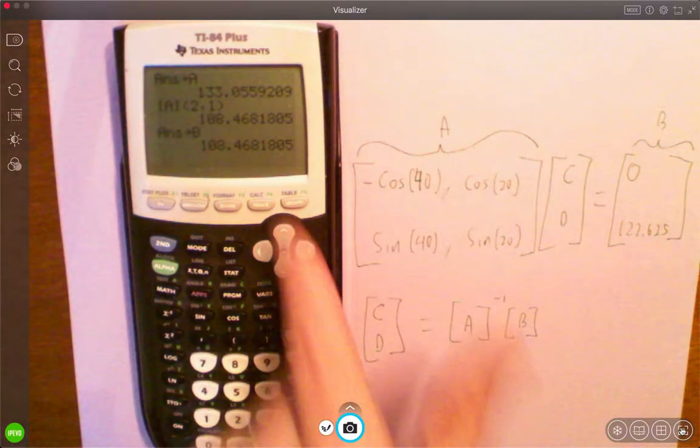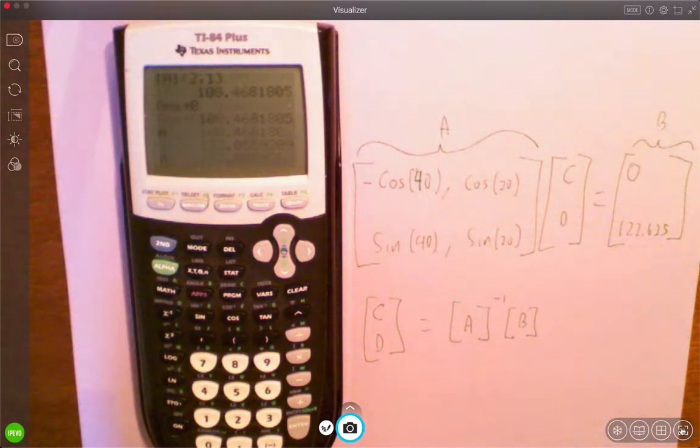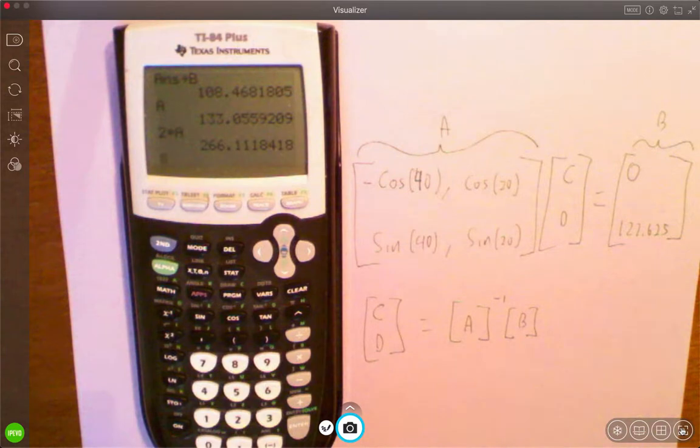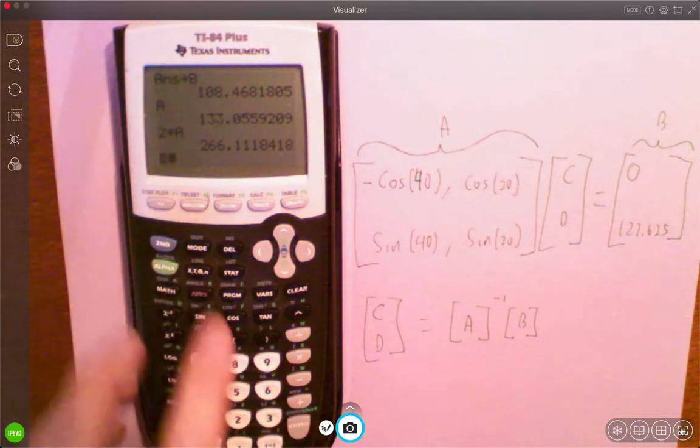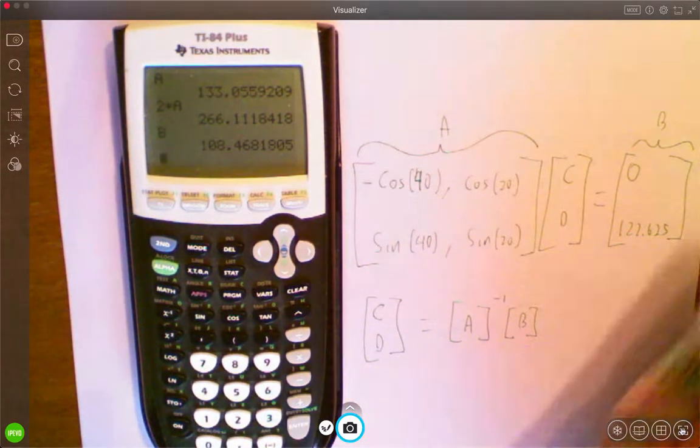And now you've got those numbers out in a variable. If I want A, I can get A out there. 2 times A. There it is. That was kind of fun. Alpha B. Totally geeking out there. Anyway, hope you enjoyed that.